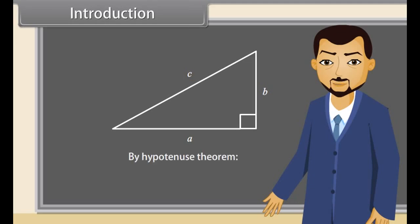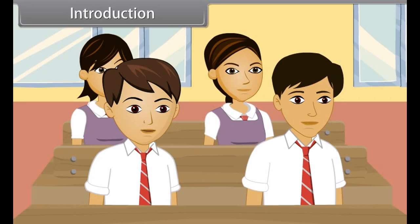So by the hypotenuse theorem, C square is equal to A square plus B square. We will prove some trigonometric identities. Teacher, what is a trigonometric identity?